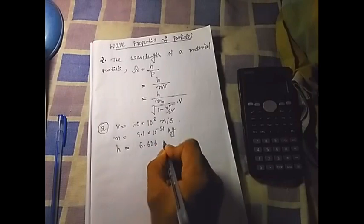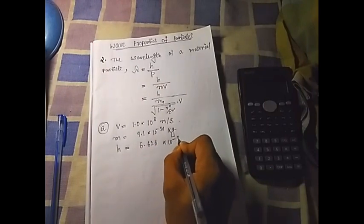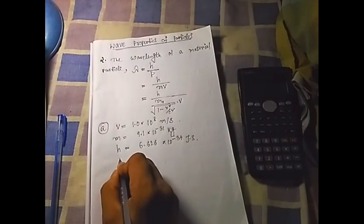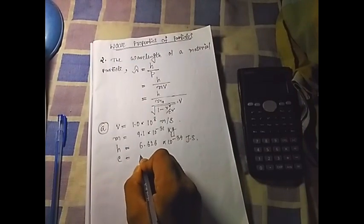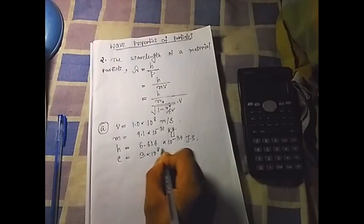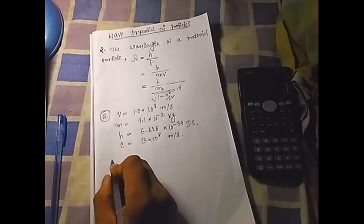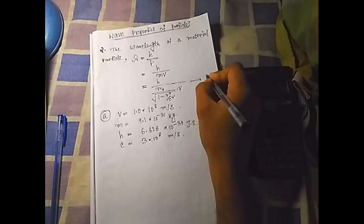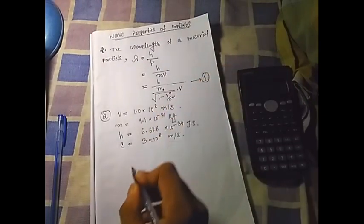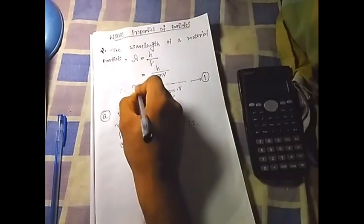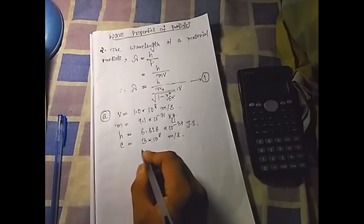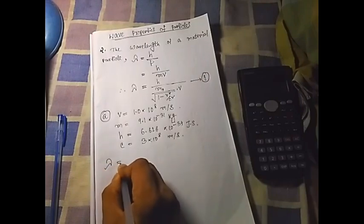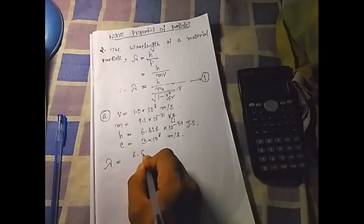We know the value of h, which is 6.626 times 10 to the power minus 34 joule seconds. The speed of light is approximately 3 times 10 to the power 8 meters per second. If we put those values in the equation, let's call it equation number one.